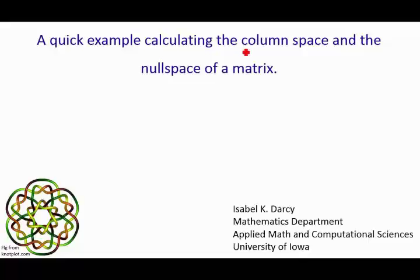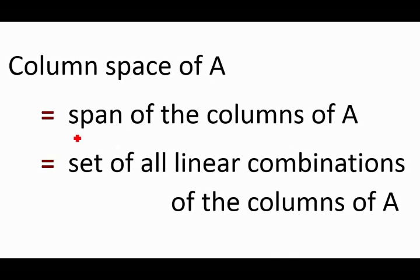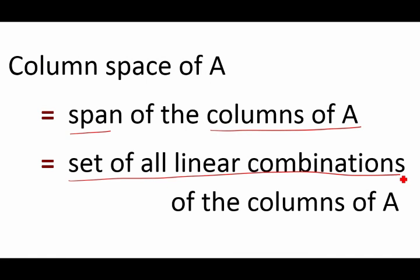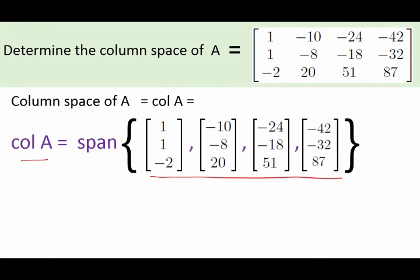A quick example calculating the column space and null space of a matrix. We will first start by determining the column space of this matrix. By definition, the column space of A is the span of all the columns of A, which is also the set of all linear combinations of the columns of A. Thus, we can easily find the column space — that is, the span of all the columns of A.